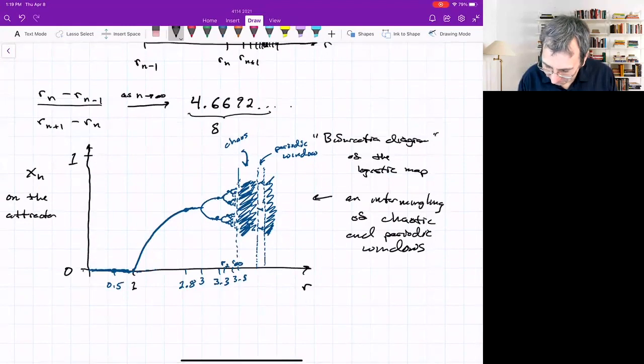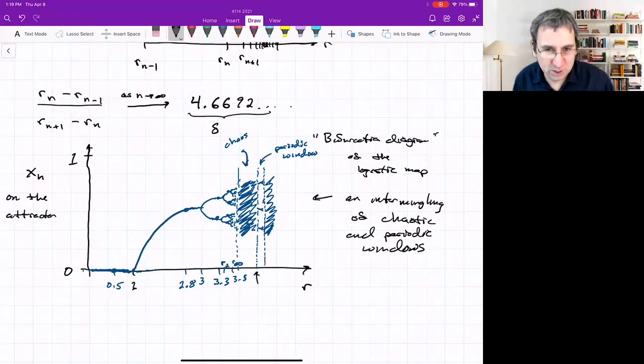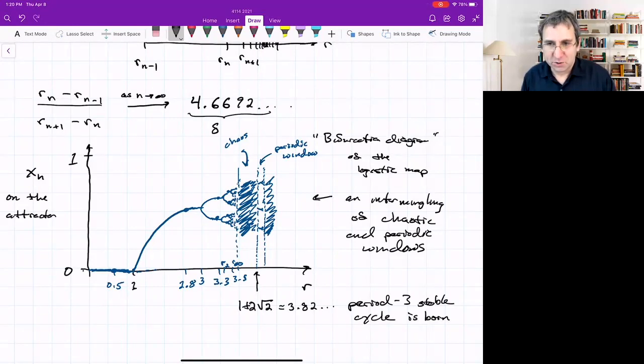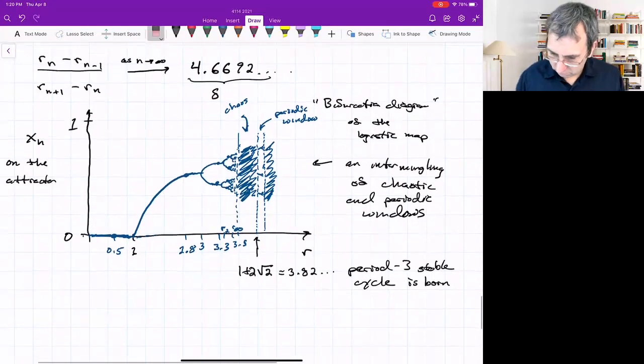This point where the biggest periodic window shows up occurs at 1 + 2√2, which is about 3.82. That's where the period-3 stable attractor was born. It turns out you can find attractors of any period. Give me any integer, for some parameter value there will be an attractor that has that period. Because in this chaos region, there are periodic windows inside. They might be infinitesimally wide, but they're there. There's a lot to unpack here and try to understand.